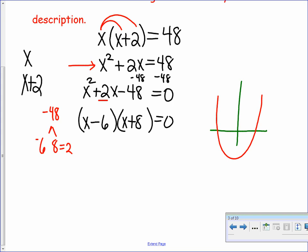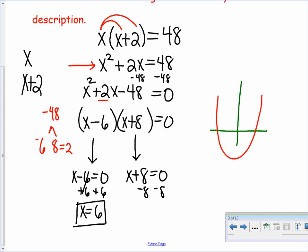Now remember the zero product property says that if this product is zero, then either the group of x minus 6 has to equal zero, or the group of x plus 8 has to equal zero. Well, you're looking for the value of x that will make each of those groups equal zero. So here I'll add 6 to both sides, and x will equal 6. And over here I'll subtract 8 from both sides, and x will equal negative 8.